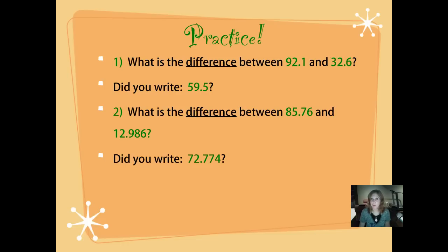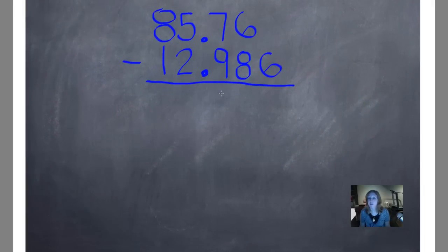Did you write 72 and 774 thousandths? Let's look to see how we worked this one. Here's another problem where the larger number actually has less digits. That's something we learned when we were learning about decimal numbers a couple of days ago. Just because a decimal number has more digits doesn't mean it's the greater number. So as we're looking at this number here on top, we want to make sure that we fill this space in with a 0 so we don't make that common mistake that 5th graders make. 0 minus 6. Can't do it. Borrow.